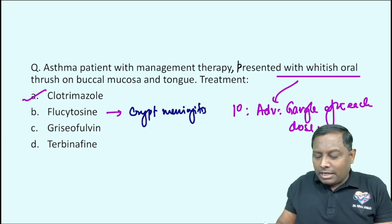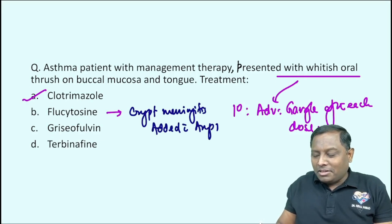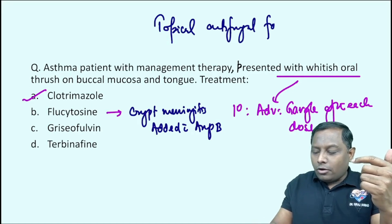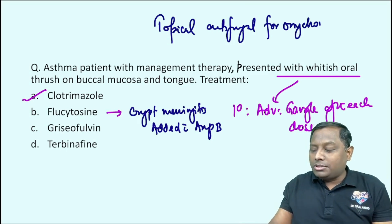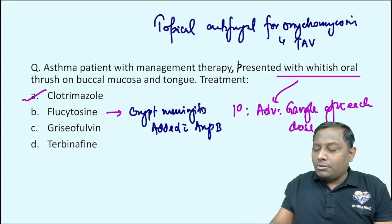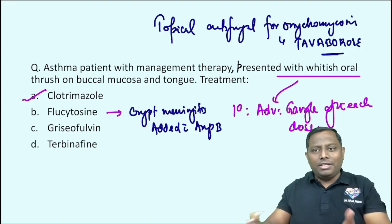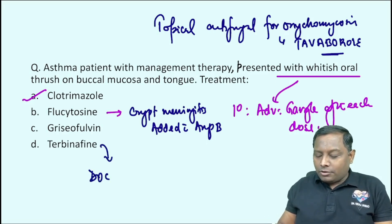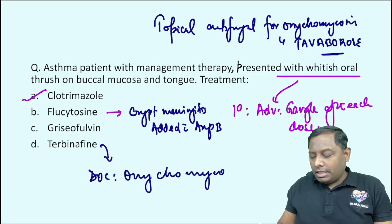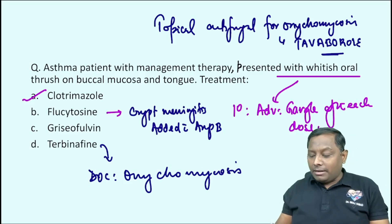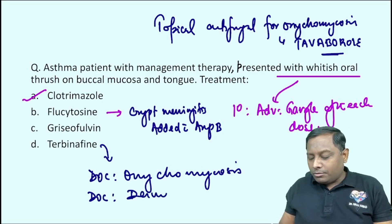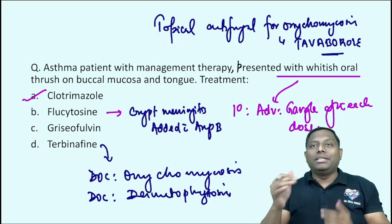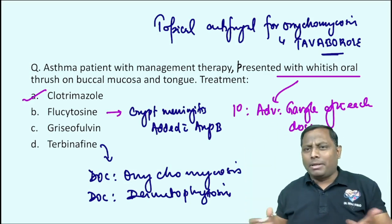Alternatively we can use topical nystatin. Flucytosine can be utilized but remember it is for more severe conditions like cryptococcal meningitis, usually added with amphotericin B. For onychomycosis — fungal infection of the nail — a recent NICT question asked about a topical antifungal that is a protein synthesis inhibitor, known as tavaborole. Terbinafine is the drug of choice in onychomycosis and other dermatophytoses. Among the given choices, we use clotrimazole.